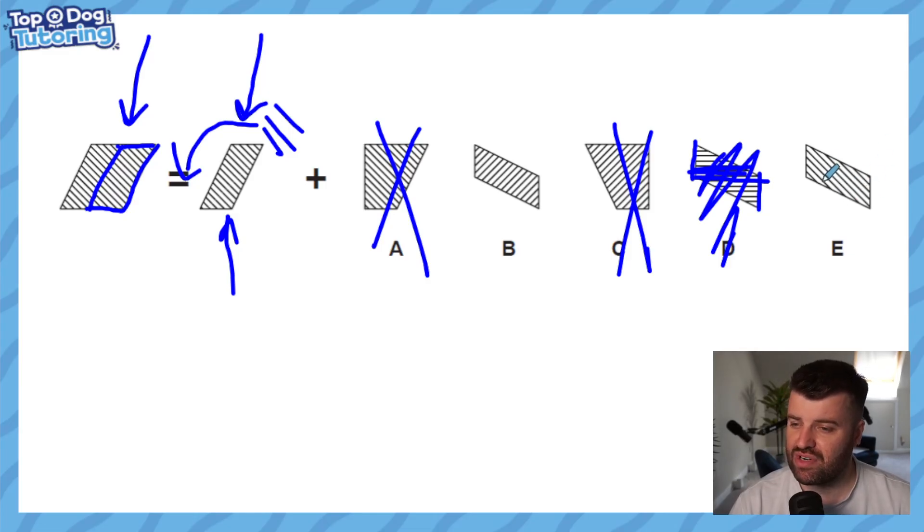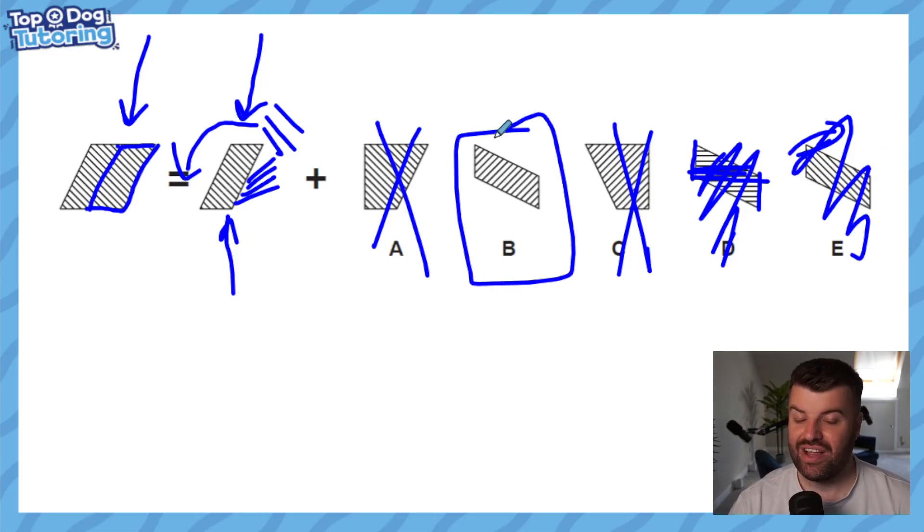Same for E, these lines are just going in the wrong direction, they'd actually end up going up like this if we were to rotate it around to make it fit, so no it can't be E either. B is actually the right answer not just because of the shape but also because of the shading inside as well.